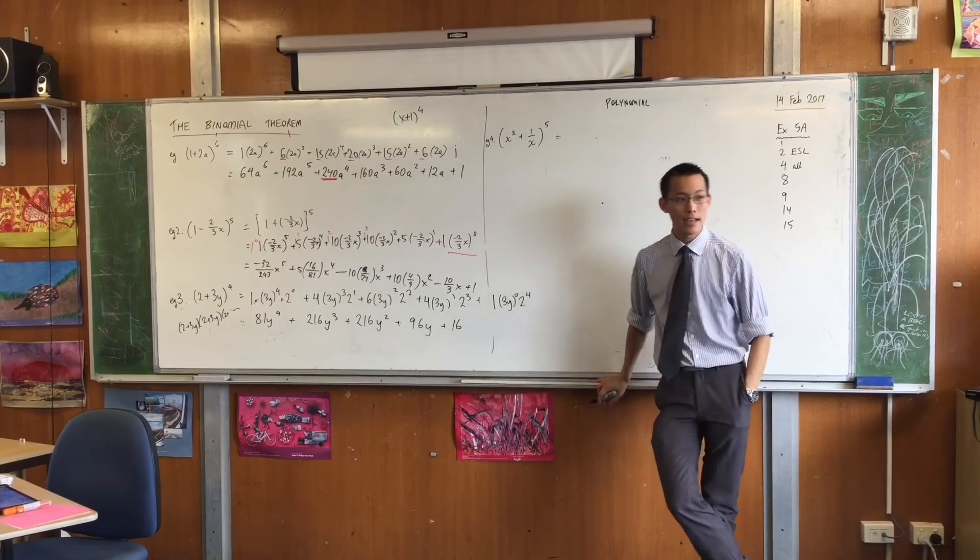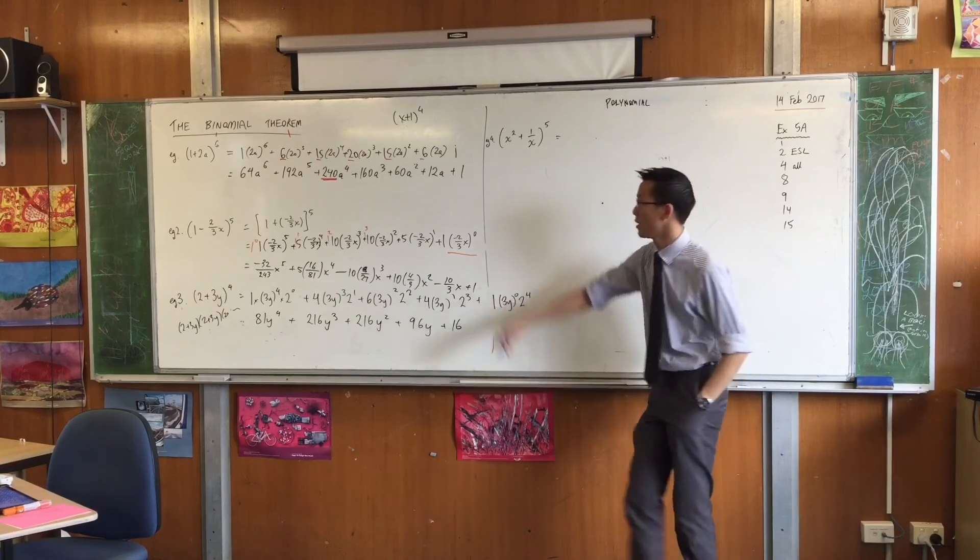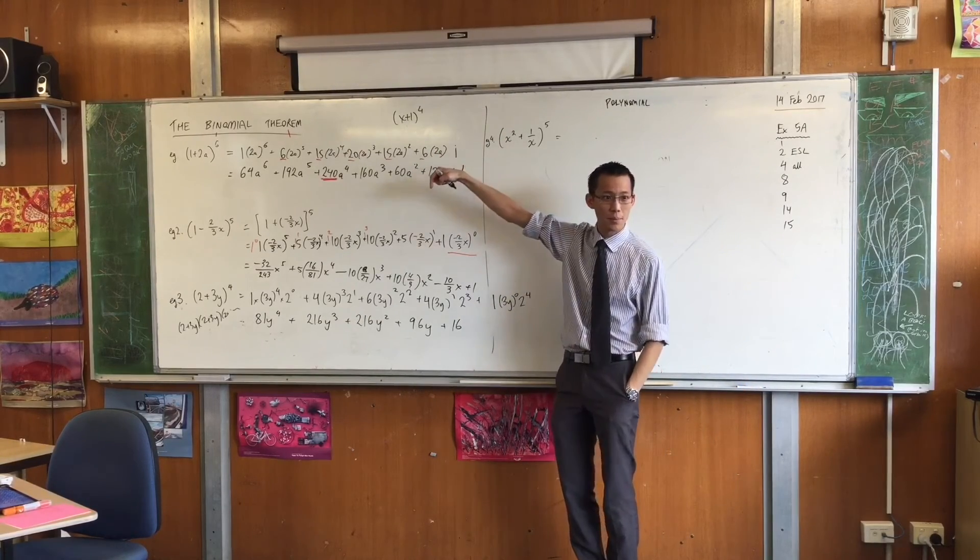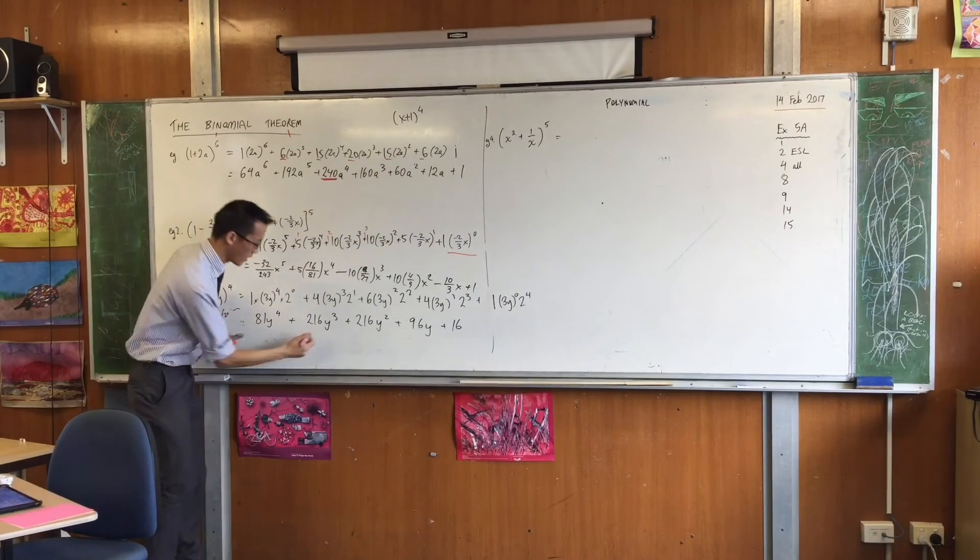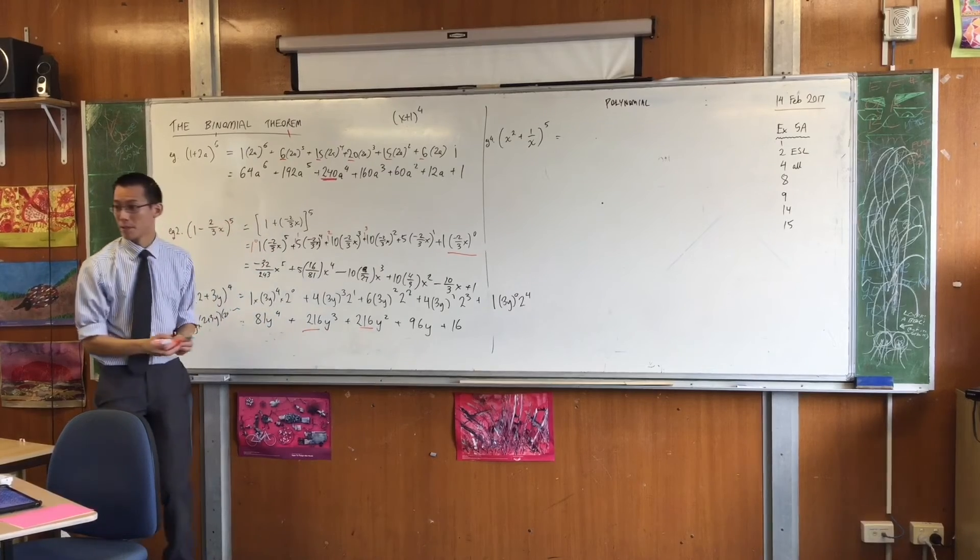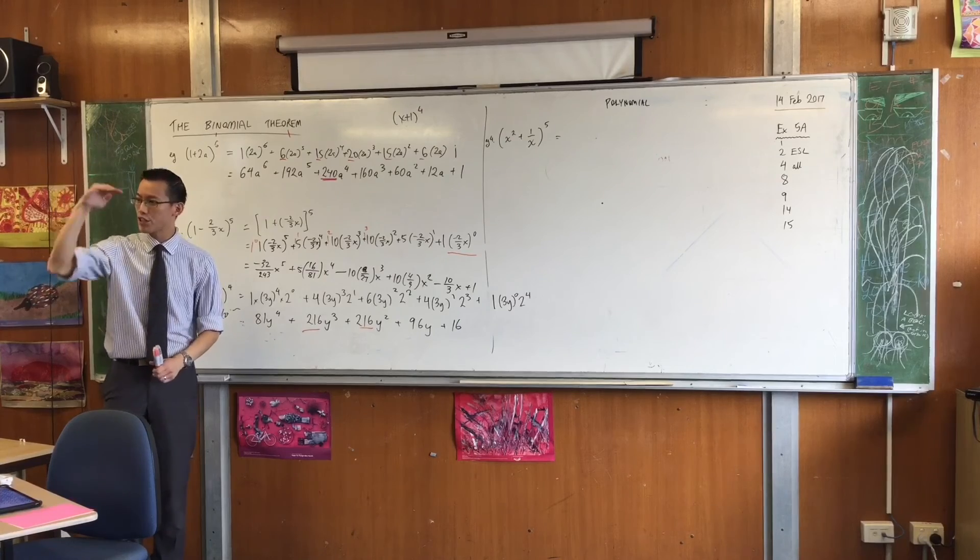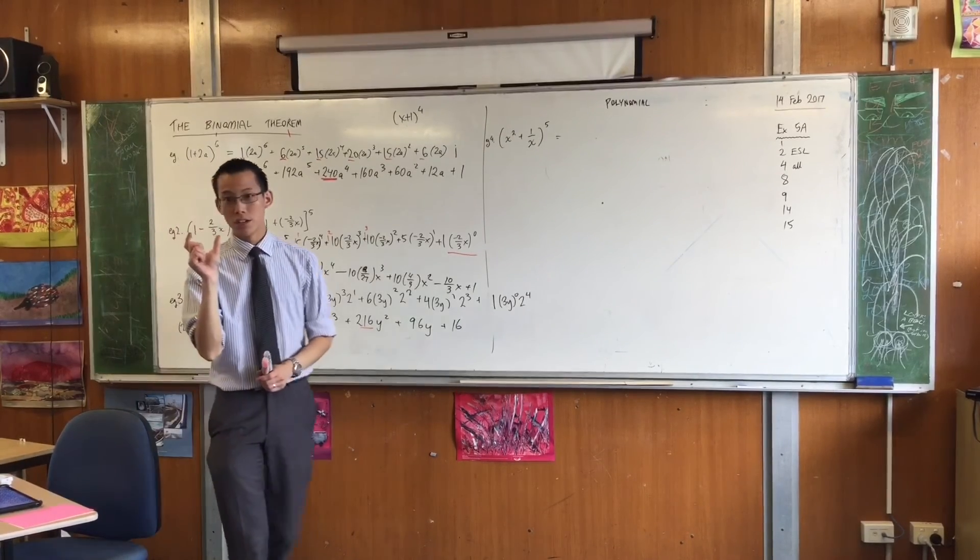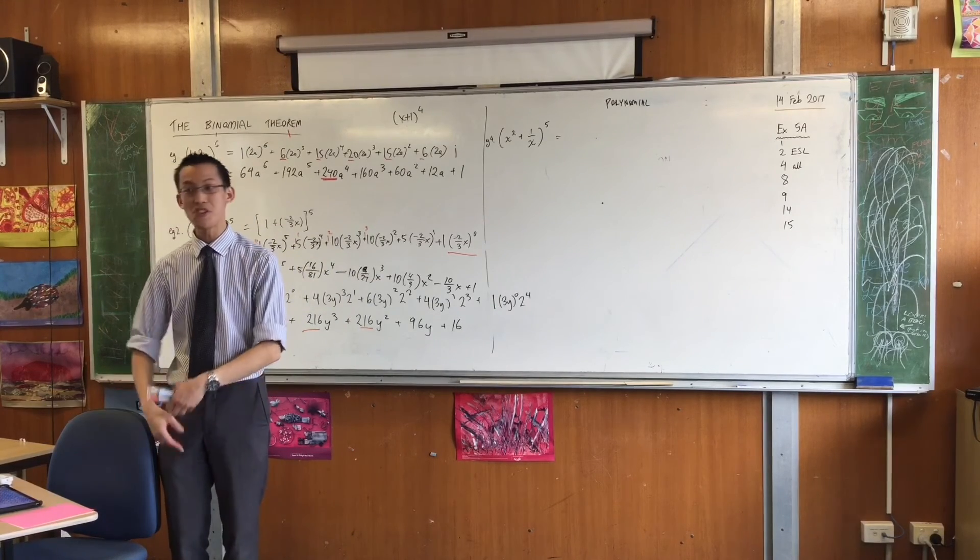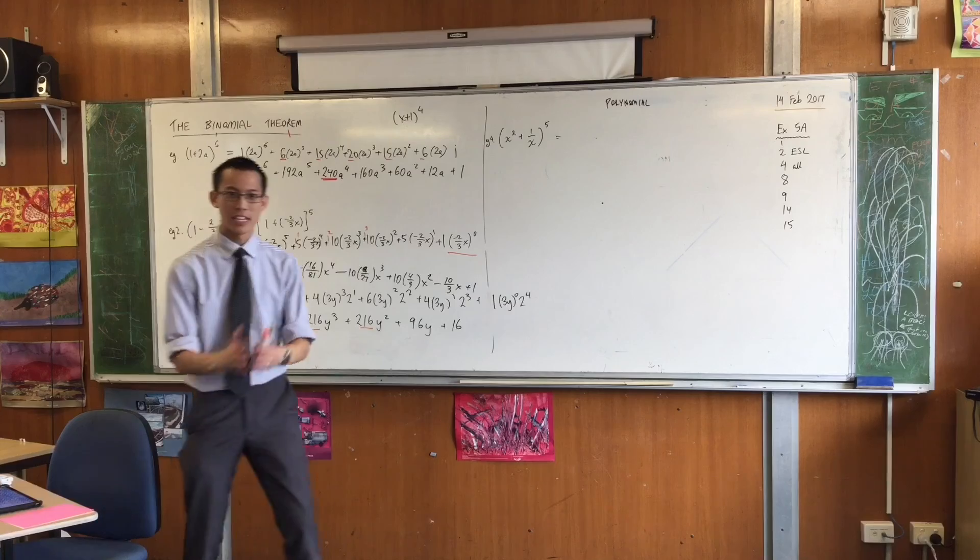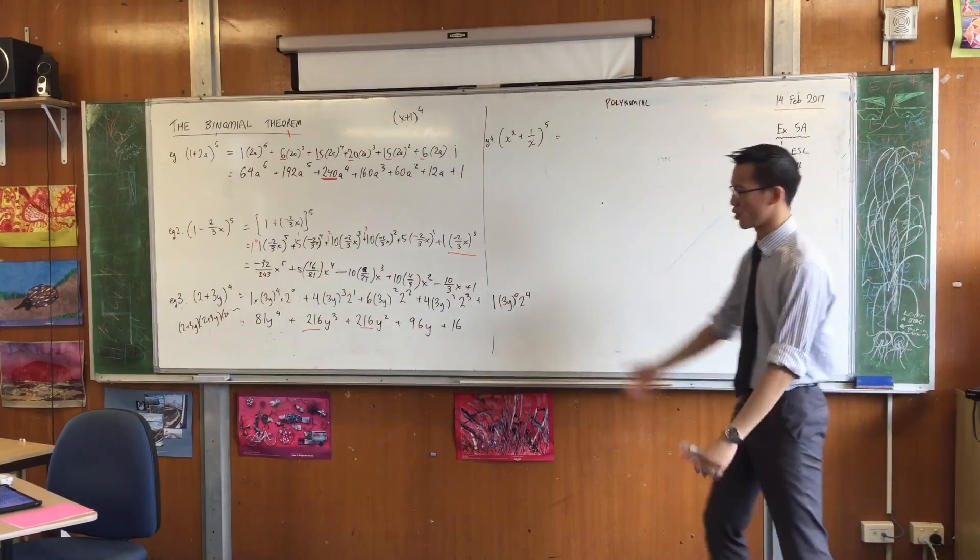Now, do you remember on the first example I pointed out, one of the questions you'll get asked later on is what's the greatest coefficient? Last time it was 240. What's the greatest coefficient here? It's 216 and it happens twice, which is a little bit weird. This happens sometimes. You shouldn't be that surprised because if you look back at regular old Pascal's triangle, every second row, have a look at the terms right in the middle. Do you notice every second row you've got 3's twice, then you get 10's twice, then 35's twice? It's because there's an even number of terms in that row of Pascal's triangle. So sometimes you'll get a double occurrence.